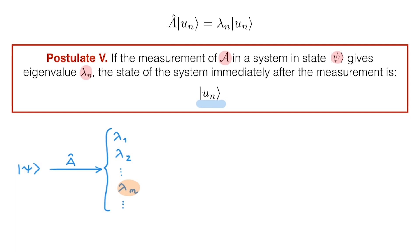This is where postulate 5 comes in. It tells us that starting from state psi, if we measure A-hat and we get lambda n, then right after the measurement the state of the system changes from psi to u n, the eigenstate associated with the eigenvalue that we measured. This process is called state collapse, and what it means is that the state psi of the system right before the measurement collapses to the eigenstate u n right after the measurement of the eigenvalue lambda n.